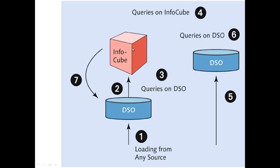In a typical setup, you have a data target such as an InfoCube on top of the DSO. The InfoCube stores data at the aggregated level. If you require data at the detail level for queries, you can always jump from the InfoCube back to your DSO.